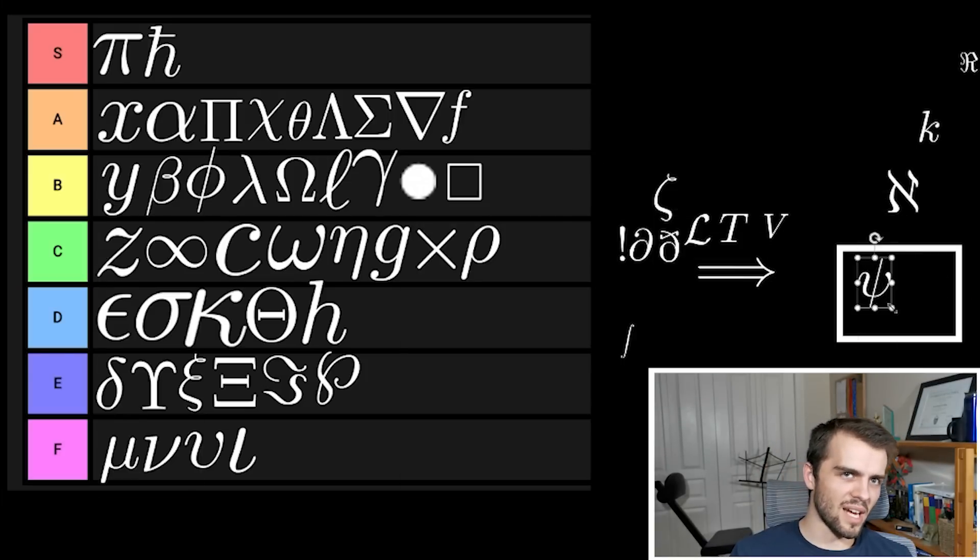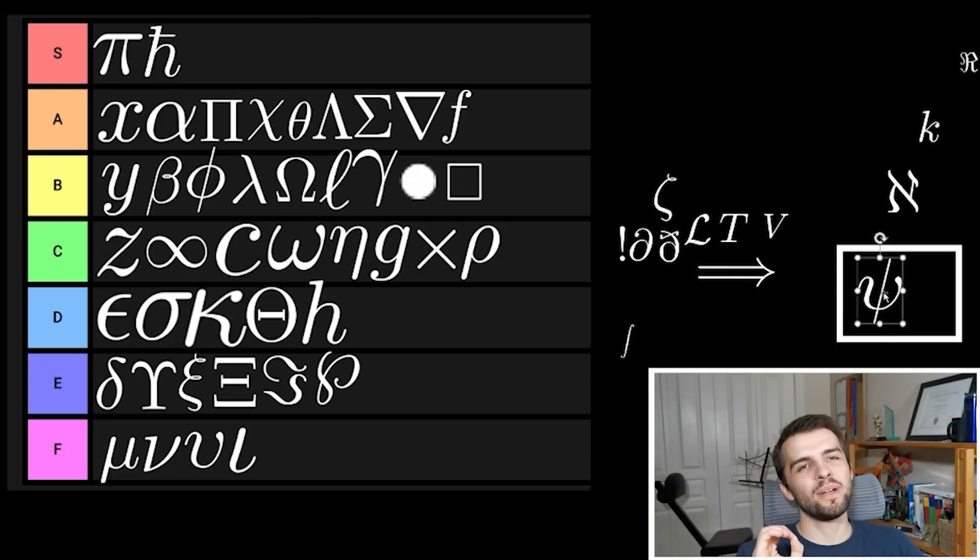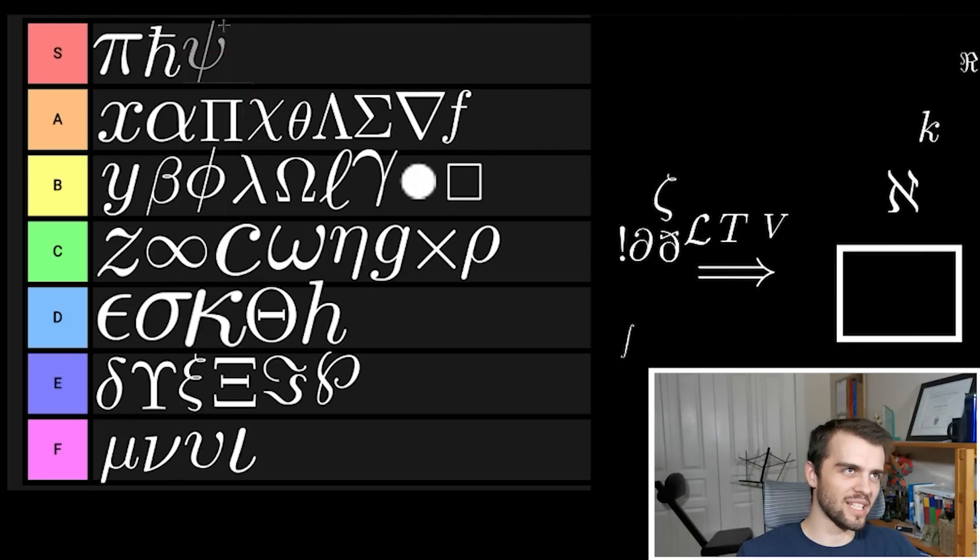Next we got psi. Psi also holds a place in my heart. The wave function in quantum mechanics. What a beautiful symbol. You got that line striking down. You got that nice little thing going through it. It looks like it's just pierced this part of it like a ribbon and it stabs right into the ground. In my opinion a lovely symbol. This is an S tier for its loveliness.